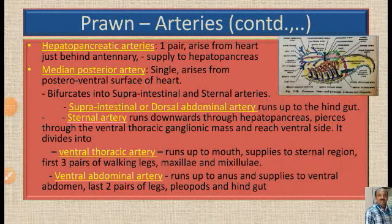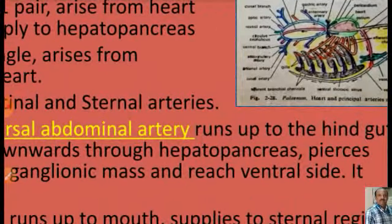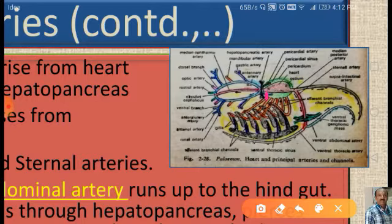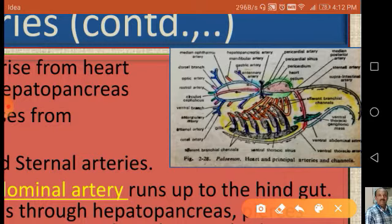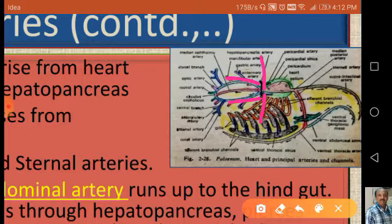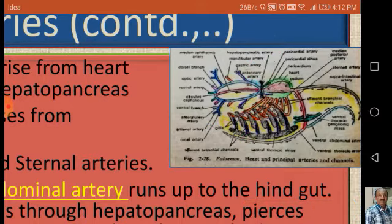The hepatopancreatic arteries arise ventrolaterally from the apex of the heart — one on each side. They go downwards into the hepatopancreas, within which they divide and subdivide enormously to supply the hepatopancreas.